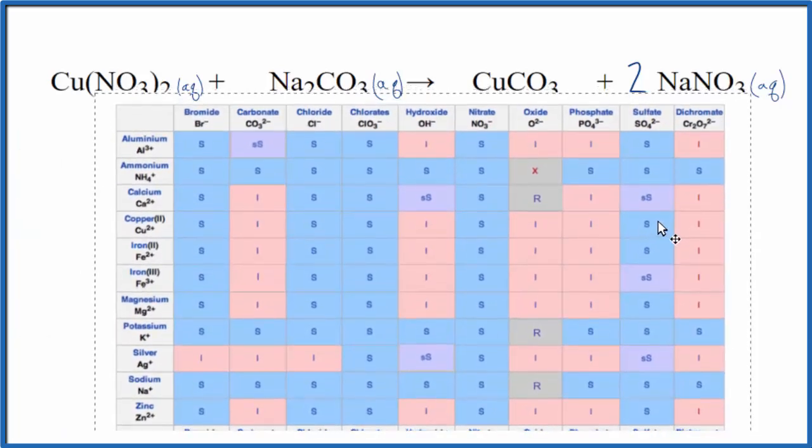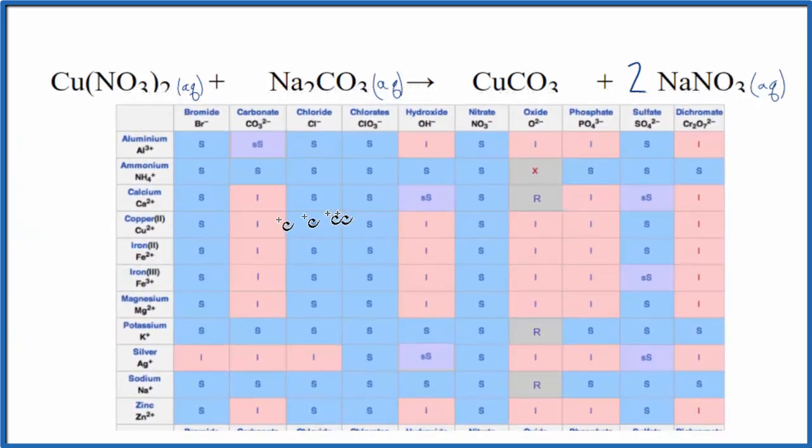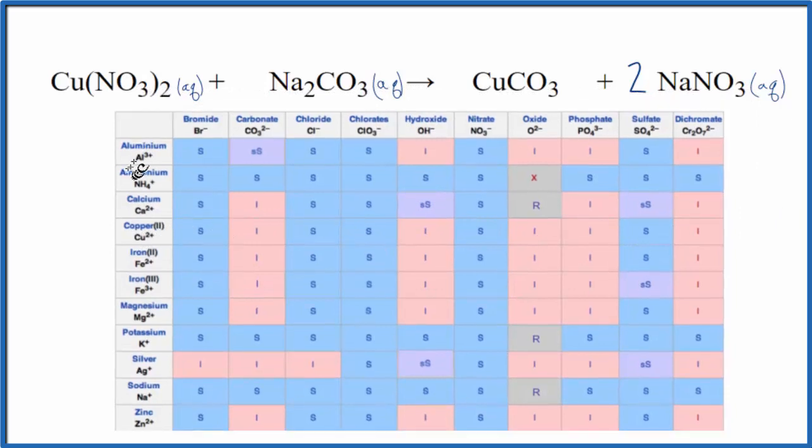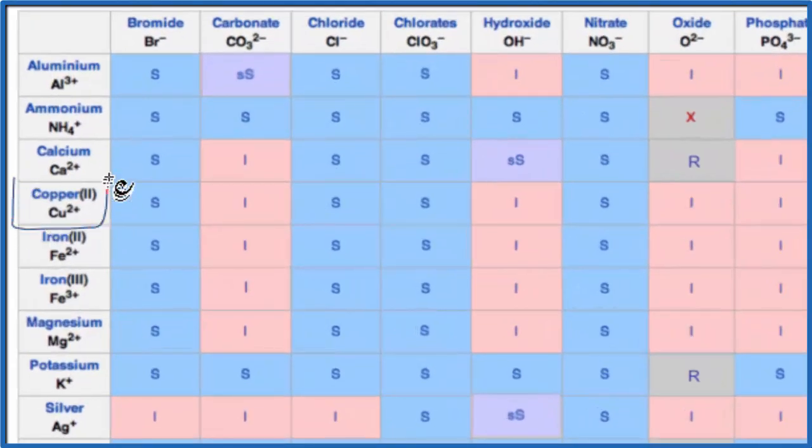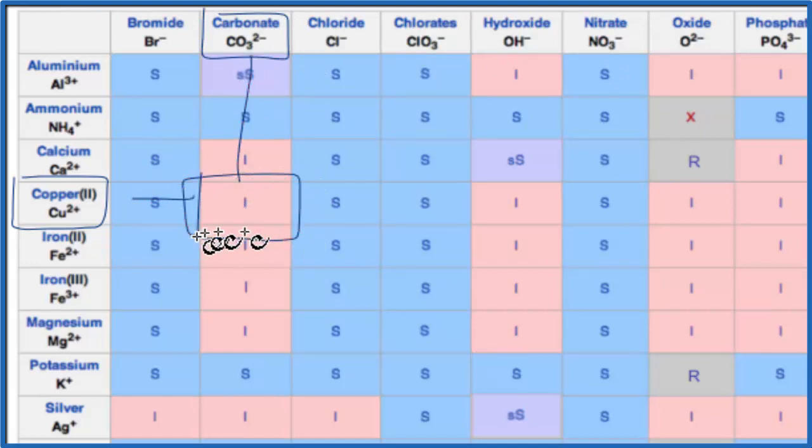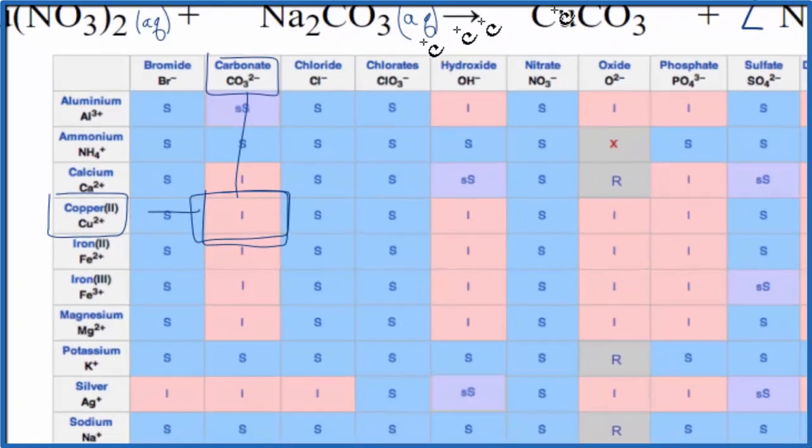So here is a solubility chart, we're going to find copper 2. So we go down, here is copper 2, Cu2+, and then we're going to find carbonate, which is actually right here, CO3 2-. We go over, we go down, and right there, that I, that tells us that copper 2 carbonate is insoluble in water. It's not going to dissolve.